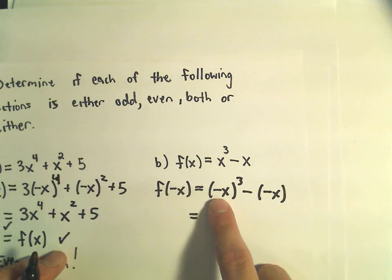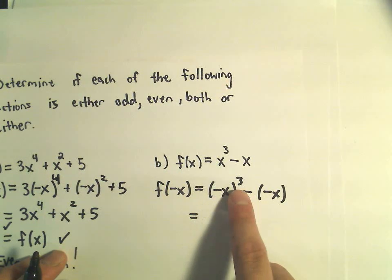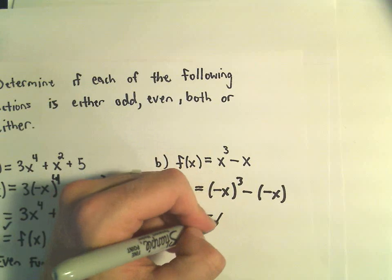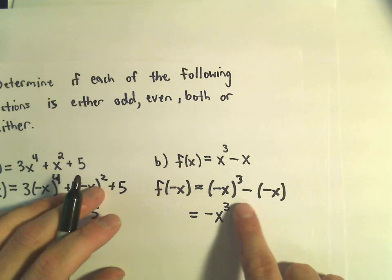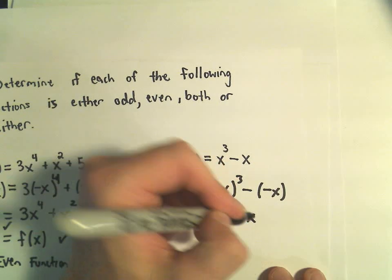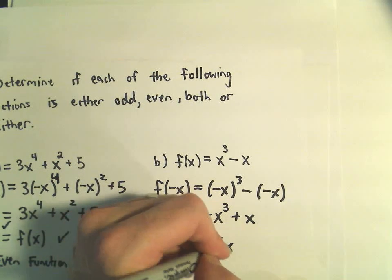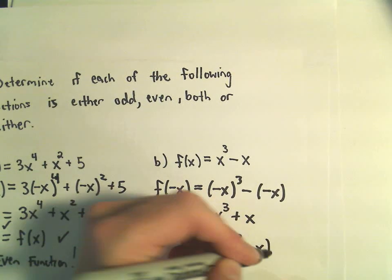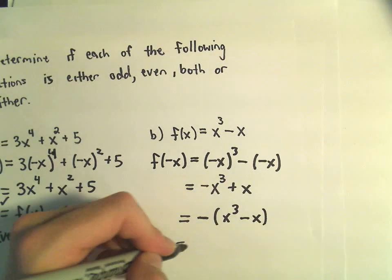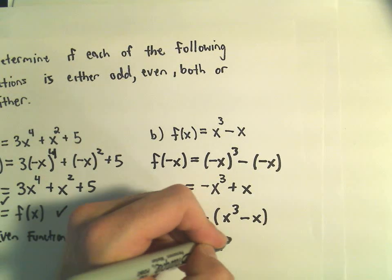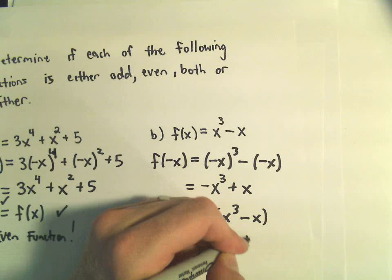Well, we can get rid of the parentheses. If you cube negative 1 three times, we'll get negative. We still have x cubed. Two negatives make a positive x. And notice we could factor the negative out. We would have x cubed minus x. But again, that's the negative of the very original function that we started with. That's the negative of f of x.